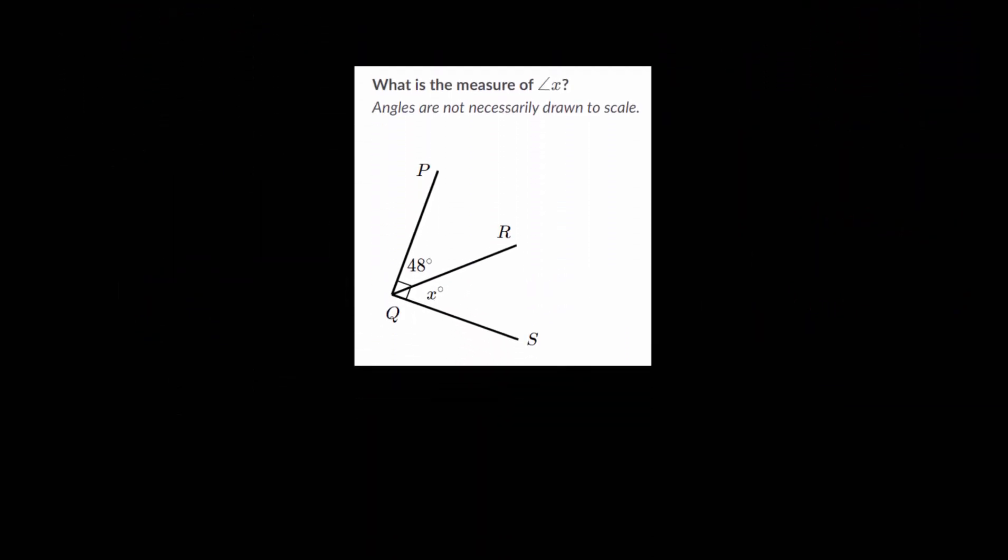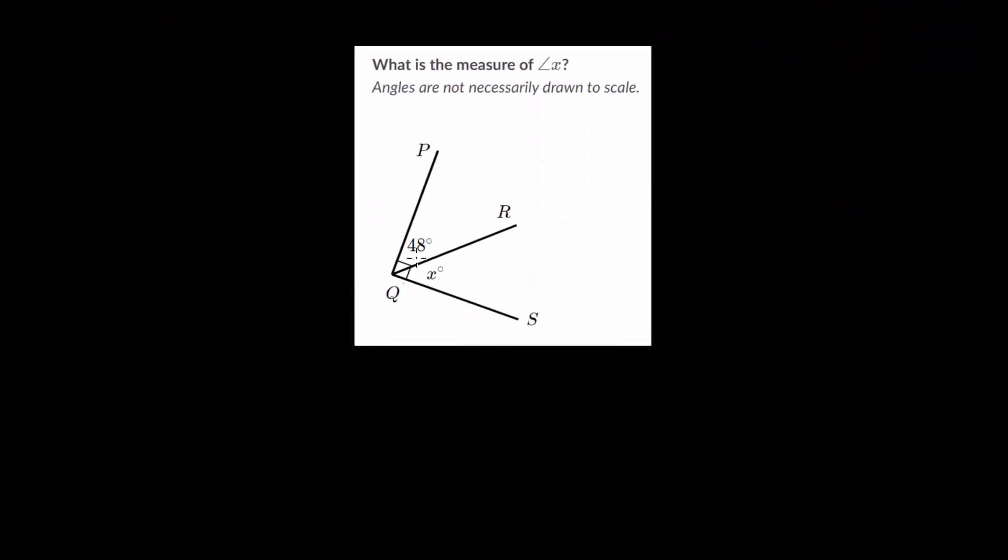Let's look at another example where now we're going to have complementary angles. Notice, we have a right angle here. And this is the key point: if you have a right angle that's split into two different parts, you know that these are complementary. So you need that right angle to know that fact.